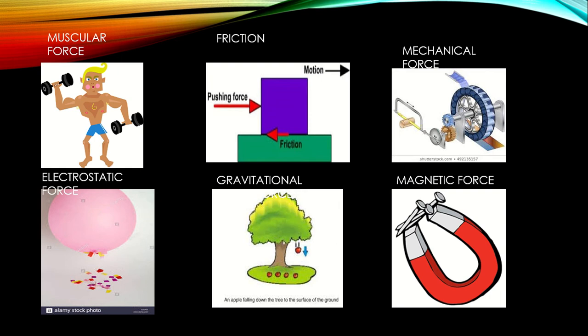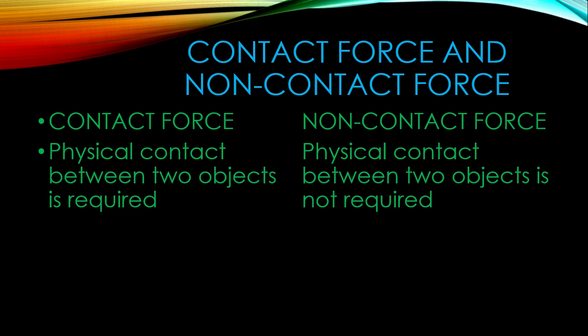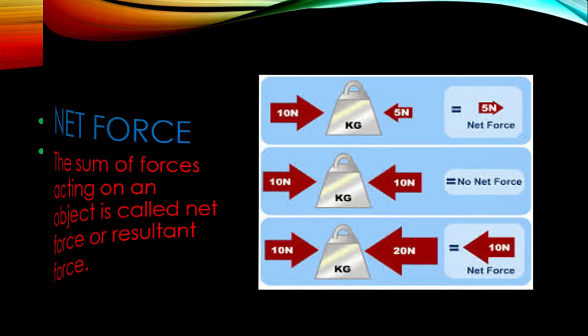The last non-contact force is magnetic force. When like poles of two magnets face each other, they repel, and unlike poles attract. Magnets also attract magnetic materials. When a magnet applies force on another magnet or magnetic material, it is known as magnetic force. What is common in all three non-contact forces? Physical contact between two objects is not required. So for contact forces, physical contact is required; for non-contact forces, physical contact is not required.